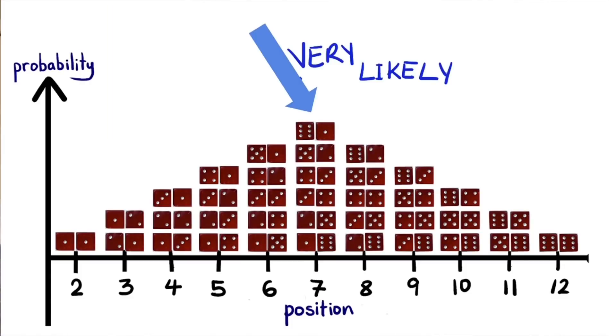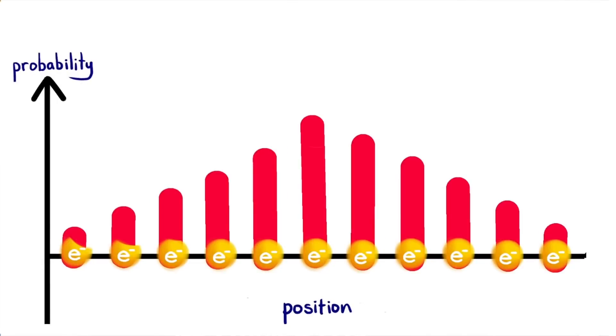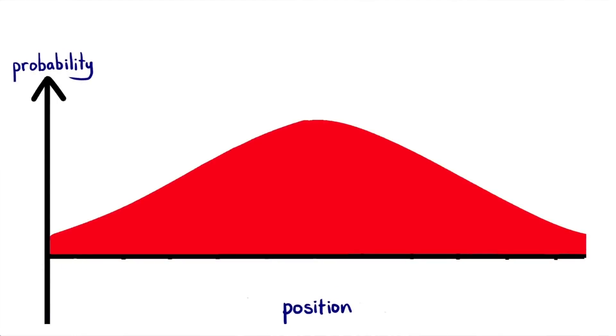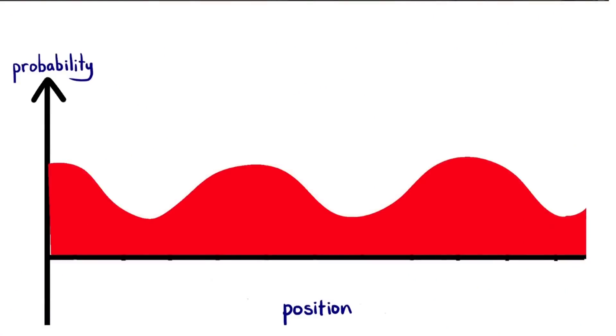Of all combinations, getting a seven is more likely than two or twelve. In reality though, the electron can be in more than just ten spots, since there are many more combinations than just two dice. Now, we can picture subatomic particles as a probability wave.